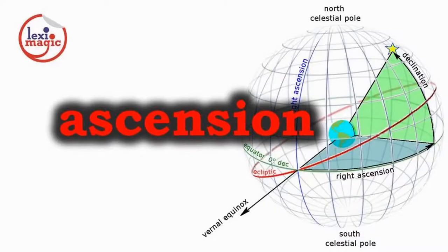Ascension is an astronomical term used to measure the angular distance of a celestial object with reference to a point on the celestial equator and the earth's equator.